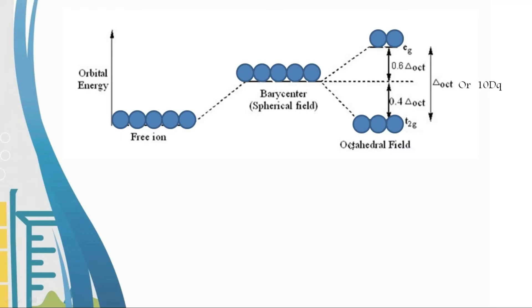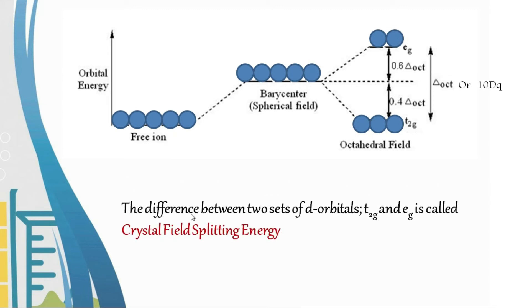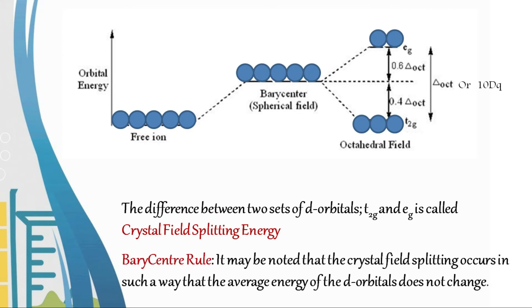The difference in energy between the two sets of orbitals (t2g and eg) is called the crystal field splitting energy, represented as 10Dq or Δo. The barycenter rule states that crystal field splitting occurs in such a way that the average energy of the orbitals does not change.